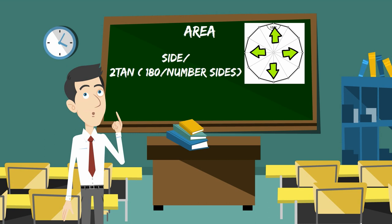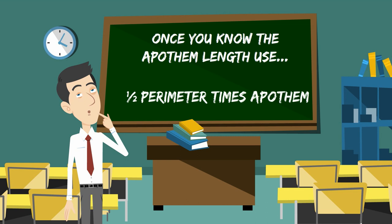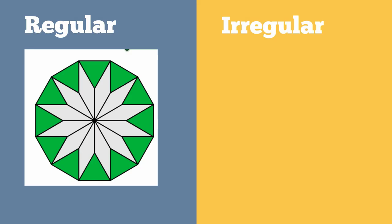If you don't know the apothem, you can use the length of one side and divide it by 2 times tangent times (180 divided by the number of sides). The tangent will be in degrees. Once you know the apothem, just plug it into one-half perimeter times the apothem.